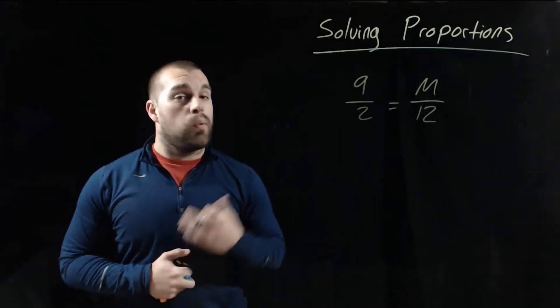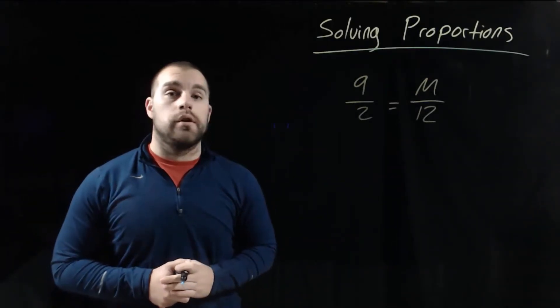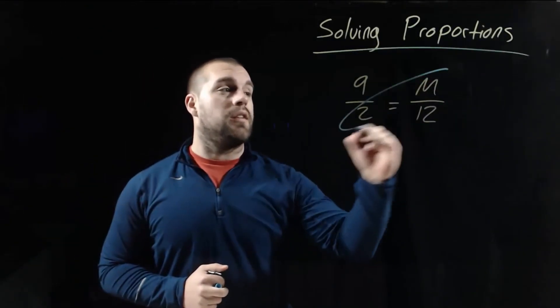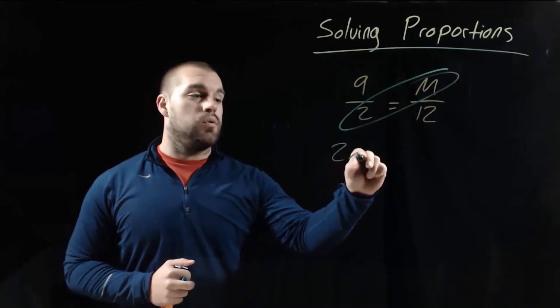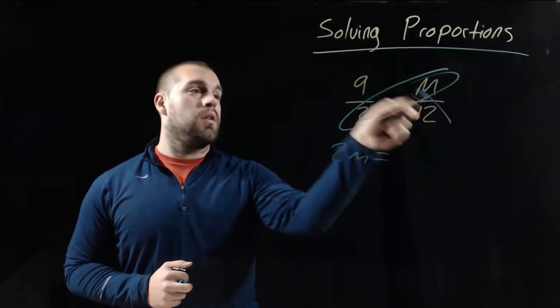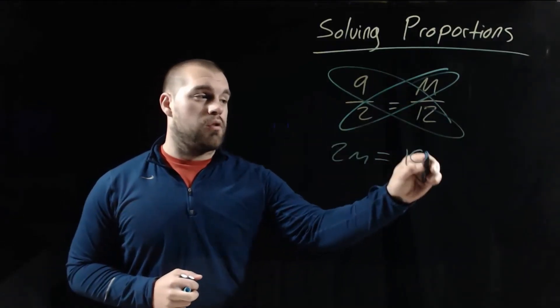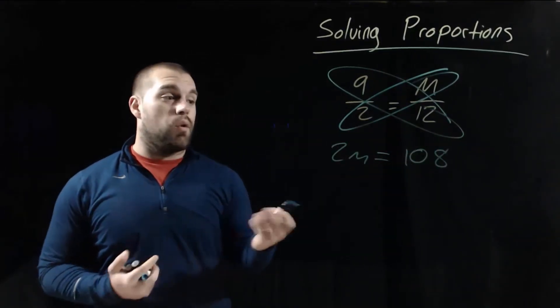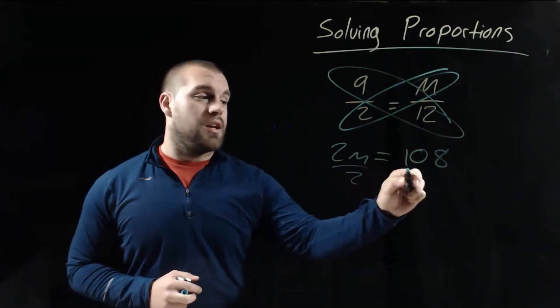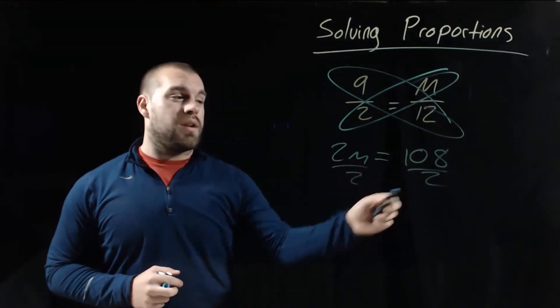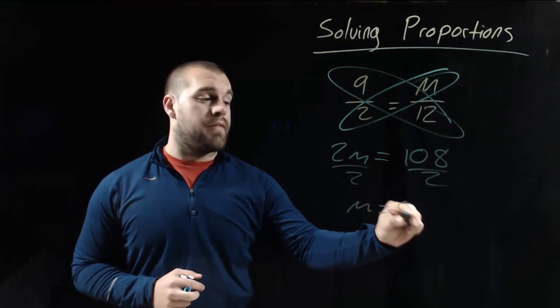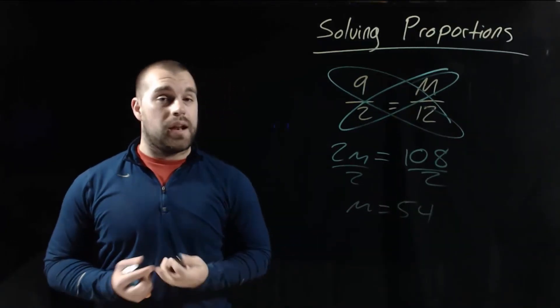We've got a new proportion up here, but we're going to still look at solving. So we're going to do our cross multiplying. I'm going to take 2 times m and get 2m. This is going to equal, now we've got to do 9 times 12. 9 times 12 is 108. Now in order to get m all by itself, we're going to divide each side by 2. 108 divided by 2 should give us a value of 54 for that m value.